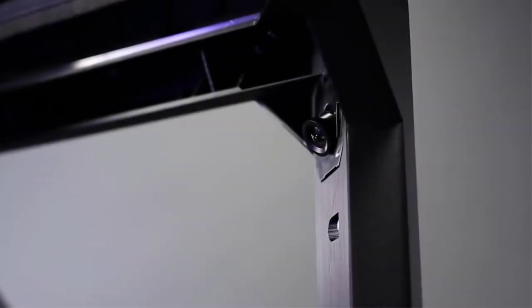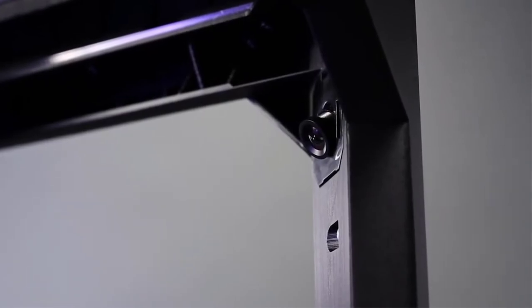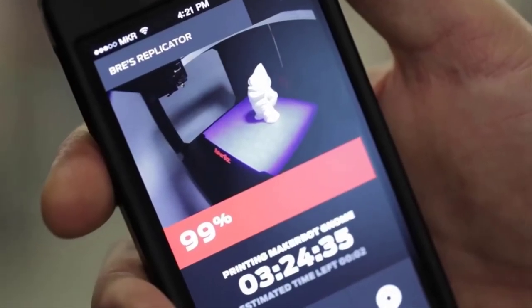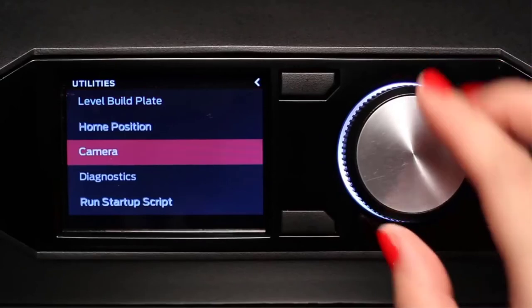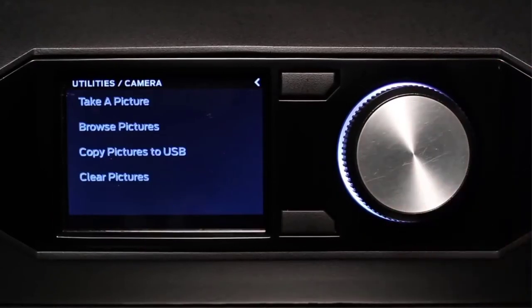One of the things that the onboard camera allows you to do is remote monitoring. That means you can go pour yourself a cup of tea and while you're doing it, check the status of your 3D model. It's also a very powerful tool for sharing - the machine can snap a picture for you, and that makes it easy for you to share your model on Thingiverse and other social networks.